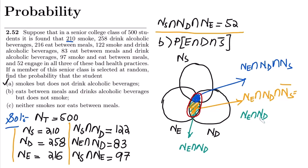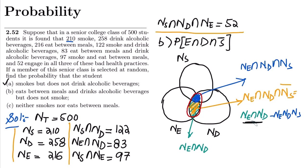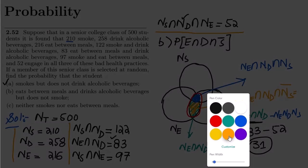So the formula is N(E ∩ D) − N(E ∩ D ∩ S). Do I know these values? Yes — N(E ∩ D) is given as 83, and N(E ∩ D ∩ S) is also already given as 52.